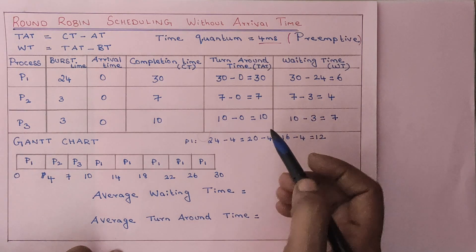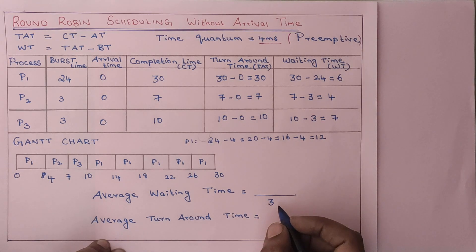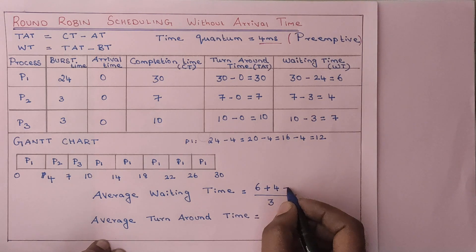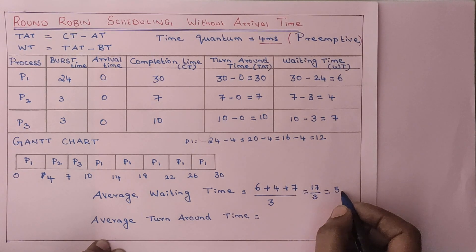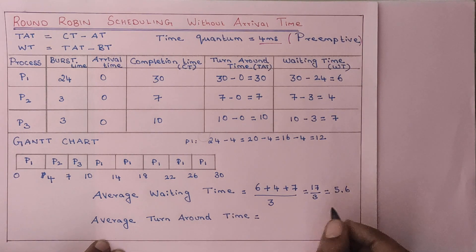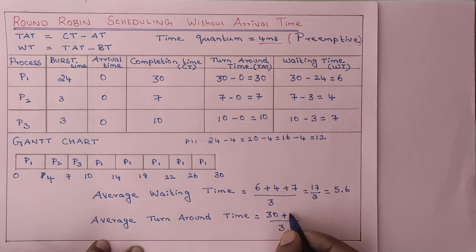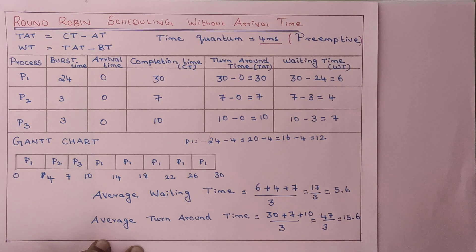The average waiting time is the sum of each process's waiting time divided by the total number of processes, which is 3. Waiting time of P1 is 6, waiting time of P2 is 4, and waiting time of P3 is 7, giving a total of 17 divided by 3, which is approximately 5.6 milliseconds. For average turnaround time, it is the sum of turnaround times divided by total processes: P1 is 30, P2 is 7, and P3 is 10, giving 47 divided by 3, which is approximately 15.6 milliseconds.